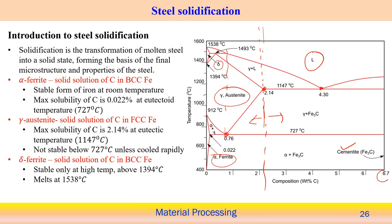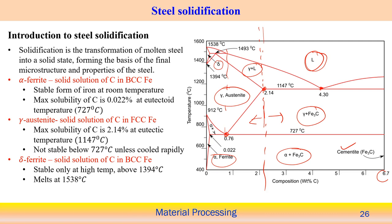Between single phases, we see mixtures such as austenite plus Fe₃C, solid-liquid mixtures (austenite plus liquid), and alpha ferrite plus cementite. Different zones in the phase diagram contain different phases or phase mixtures. The existence of different phases depends on both temperature and carbon composition, and this information is obtained from the equilibrium phase diagram.